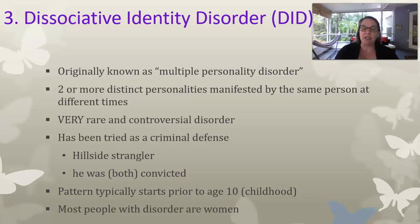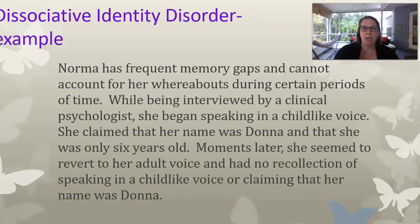The pattern typically starts prior to age 10, so it is a disorder we see in children, and it occurs more often in women than in men. Here's an example: Norma has frequent memory gaps and cannot account for her whereabouts during certain periods of time. While being interviewed by a clinical psychologist, she began speaking in a childlike voice, claiming her name was Donna and that she was only six years old. Moments later, she seemed to revert to her adult voice and had no recollection of speaking in a childlike voice or claiming that her name was Donna.